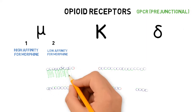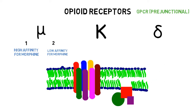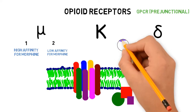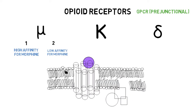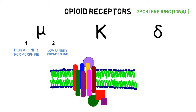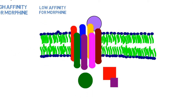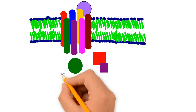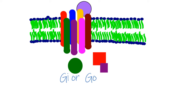Opioid receptors are G-protein coupled receptors specifically present on prejunctional neurons, and therefore they control the release of other neurotransmitters. They have the typical structure of a G-protein coupled receptor: seven transmembrane helices along with a G-protein molecule. As soon as the opioid binds to the agonist site on the extracellular side, it induces conformational changes, opens the binding site, and allows binding of the G-protein. The conformational change then passes to the G-protein and it dissociates from its heterotrimeric structure.